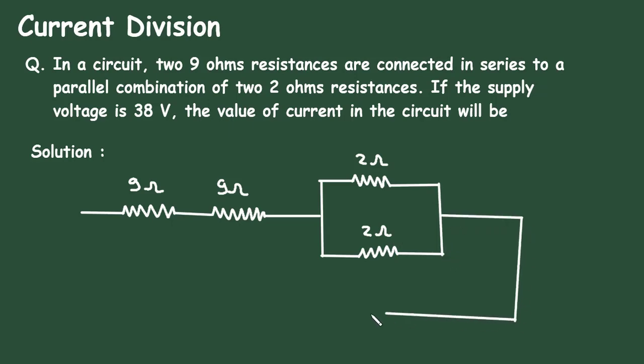The supply voltage given to this circuit is 38V. So this voltage source value will be 38V. We have to find this supply current.